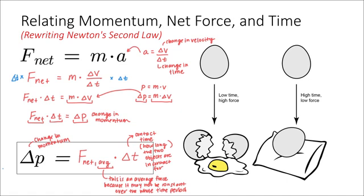It's the average force exerted on that object, because over that whole time period where the egg is touching the ground, the force may fluctuate. But we're just going to say the average net force multiplied by the contact time, in other words, how long those two objects are in contact for.